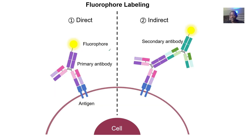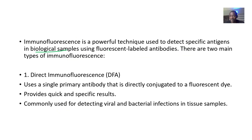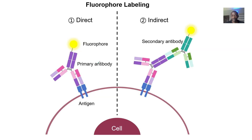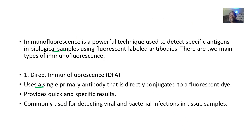There are two main types of immunofluorescence: the primary (direct) and the secondary (indirect). The direct or primary one uses a primary antibody that is directly conjugated to a fluorescent dye, providing quick and specific results. It is commonly used to detect viral and bacterial infections in tissue samples.